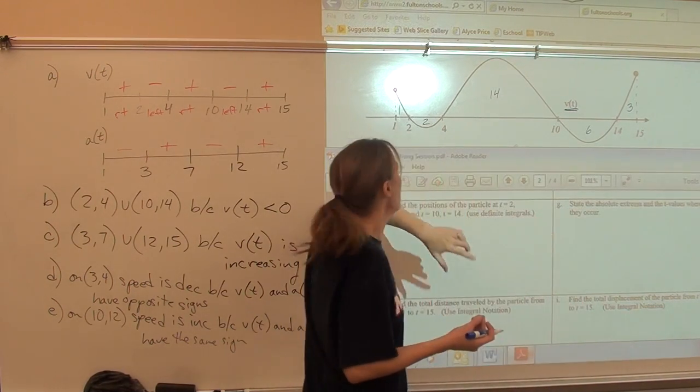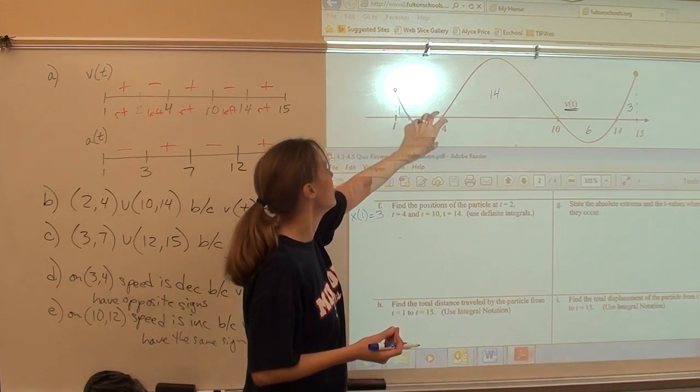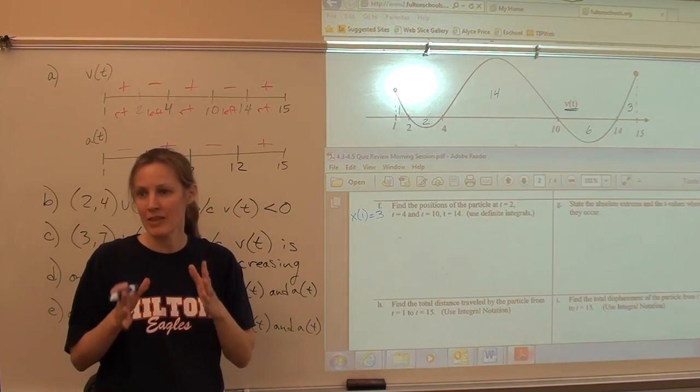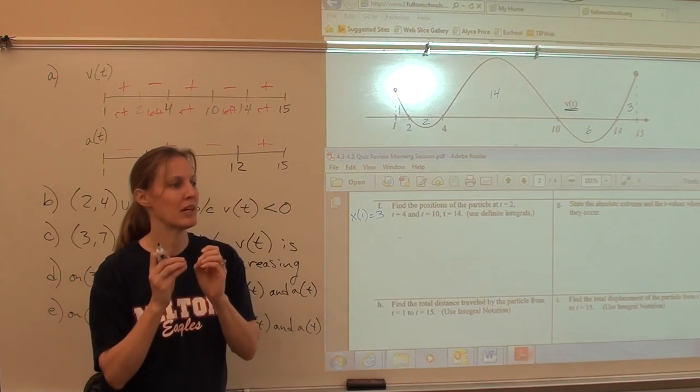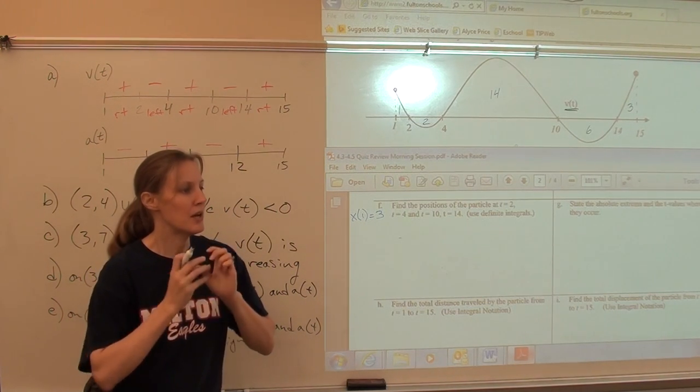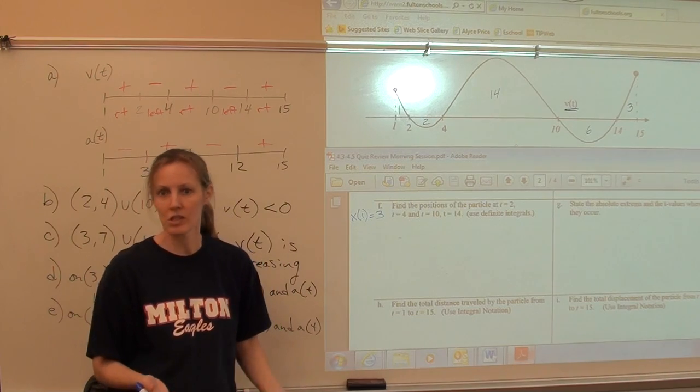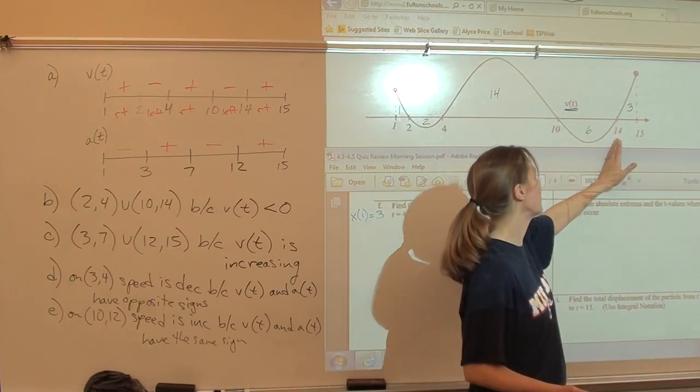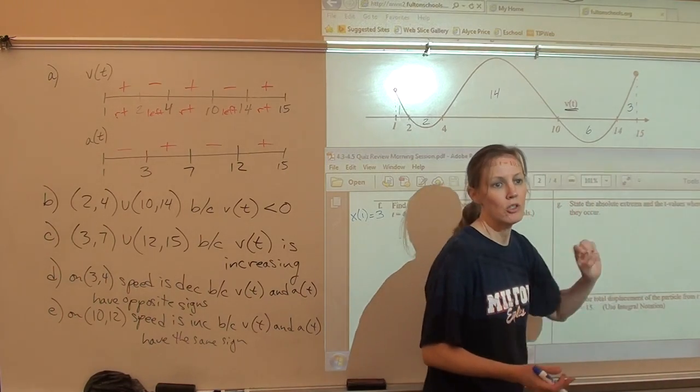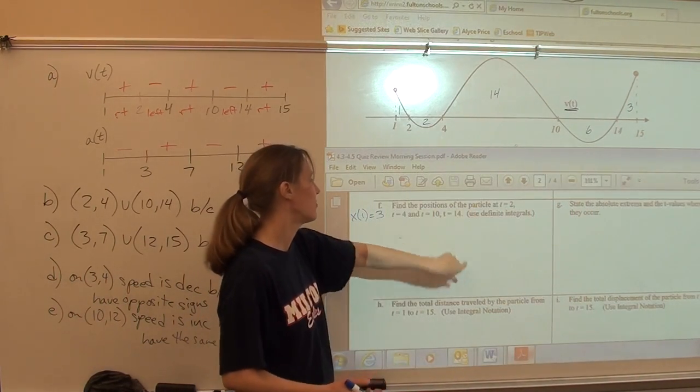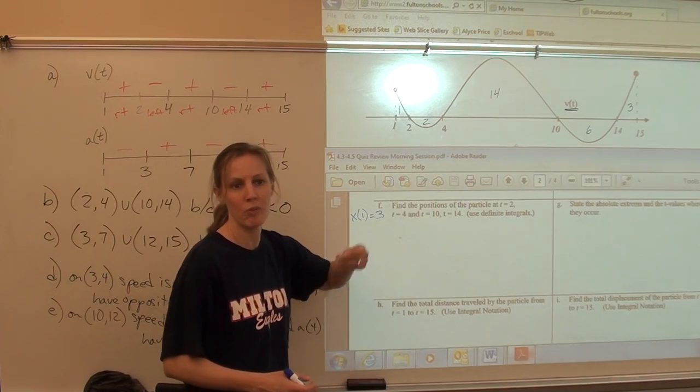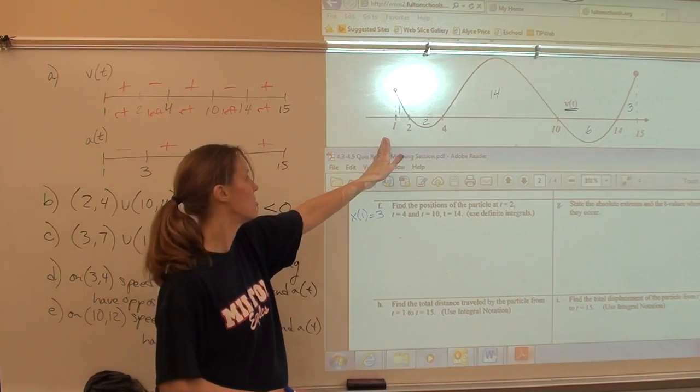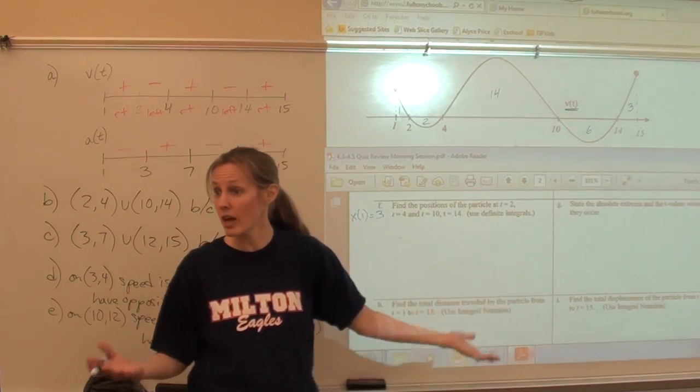Then, it moves 14 to the right, so now it's at 16. Then, it moves 6 to the left, so now it's at position 10. Then, it moves 3 to the right, so it ends at 13. So, the area under the velocity curve tells you how far the particle has traveled in that interval. And, if it's above the x-axis, it would be to the right, and below the x-axis, it would be to the left.